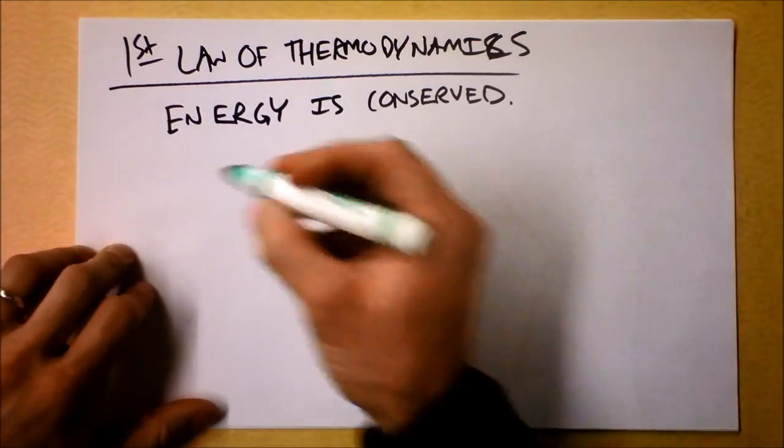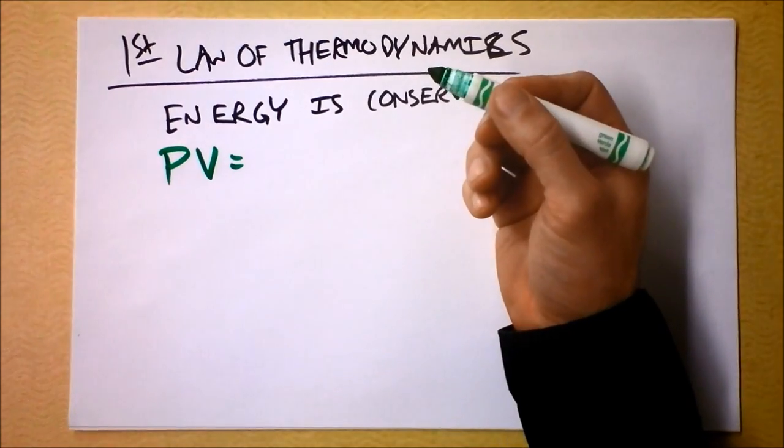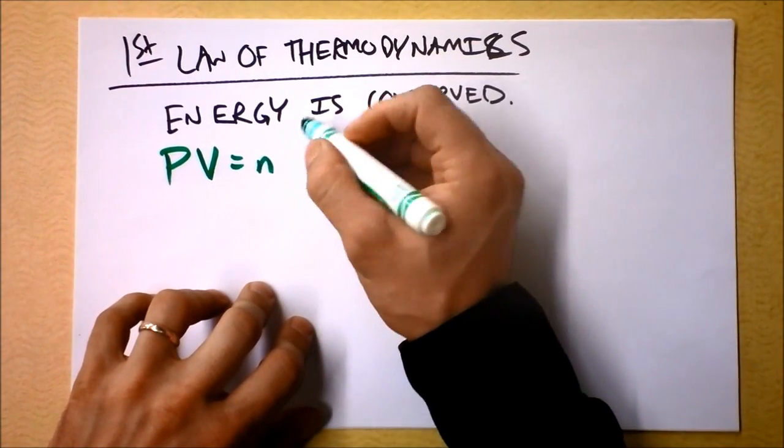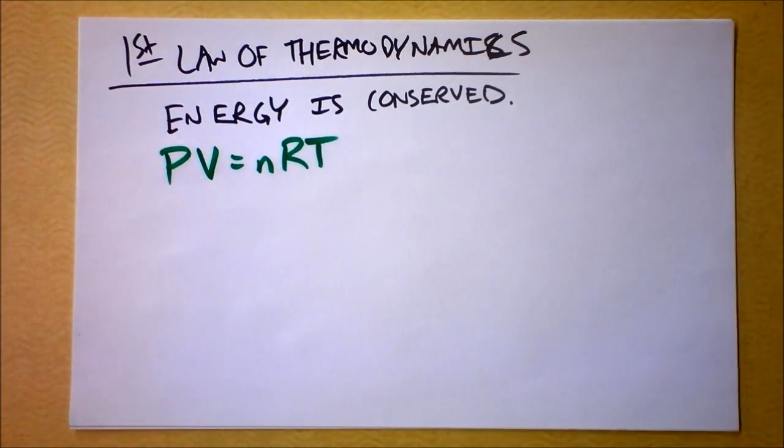The state of a gas is given by this: PV is, Kevin, what do you want to do, capital N or lowercase N? Lowercase N. N, and then, well, we've got to do an R then. Okay. PV is nRT. That's probably the way you learned it anyway.